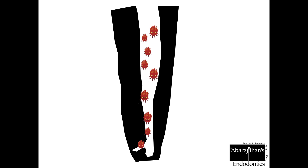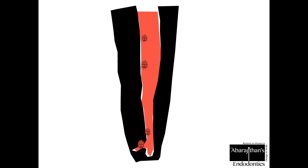Even after sufficient cleaning and shaping is achieved, it is not 100% possible to eliminate all microorganisms from the root canal. In an infected root canal, some bacteria will still be left behind. The goal of obturation is to create an environment that is completely packed with no space for bacteria to multiply and grow, while also possessing some antibacterial efficacy to inhibit the further growth of leftover microbes.